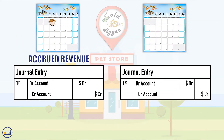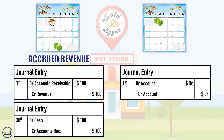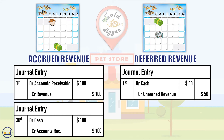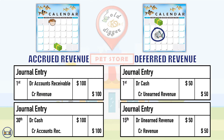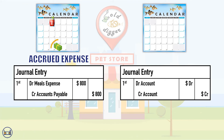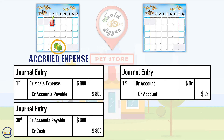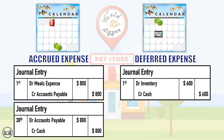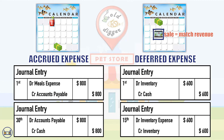When revenue comes before cash, we'll debit accounts receivable and credit revenue. Later, when cash is received, we'll debit cash and credit accounts receivable. When cash comes before revenue, we debit cash and credit unearned revenue. Then, once we earn the revenue, we'll debit unearned revenue and credit revenue. When an expense comes before cash, we debit our expenses and credit accounts payable. Then, when we pay in cash, we debit accounts payable and credit cash. Finally, when cash comes before an expense, we'll debit our assets and credit cash. Later, when we use up the value of the asset, we debit our expenses and credit our assets.